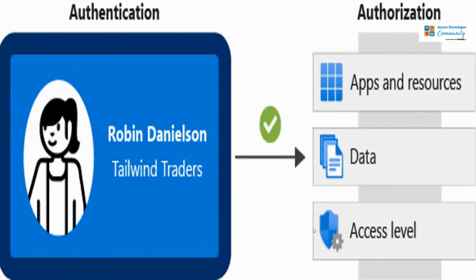To summarize: there's an ID card provided by an organization — like Tailwind Traders — that serves as authentication. Once that green tick is confirmed, the user like Robin Danielson is then authorized to access specific apps, resources, data, and within defined access limits. That's how authentication and authorization are related.